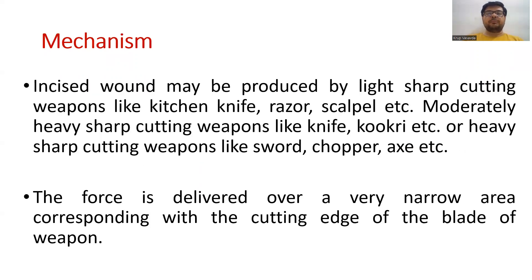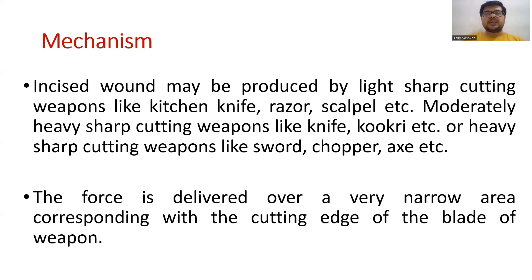Mechanism: Incised wound may be produced by light sharp cutting weapons like kitchen knife, razor, scalpel, etc. Moderately heavy sharp cutting weapons like knife, cookery, etc. Aur heavily sharp cutting weapons like sword, chopper, axe, etc. Par agar vo heavy sharp cutting weapons se incised wound kiya gaya hai to phir usko chop wound kehlayega. Chop wound ka video ek alag link ke saath description box mein diya hua hai. The force is delivered over a very narrow area corresponding with the cutting edge of the blade of the weapon.